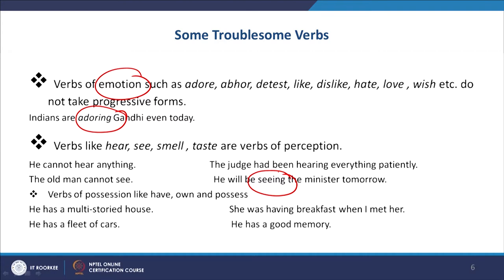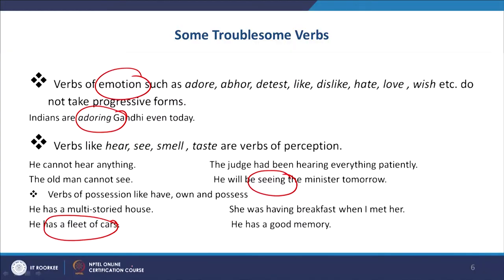The fourth category of troublesome verbs is verbs of possession. For example, 'I owe you a debt' — you cannot say 'I am owing you a debt.' 'I have a car,' 'they have a car' — not 'they are having a car.' At times people make bad use of it and say 'He is having a fleet of cars' — no, you must say 'He has got a fleet of cars.' 'Have' in this sense refers to possession.